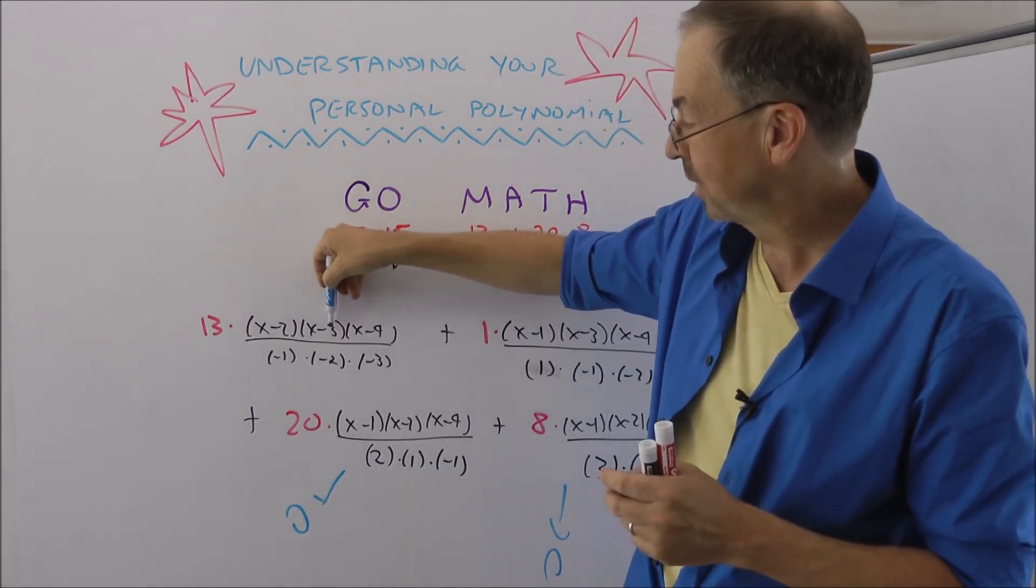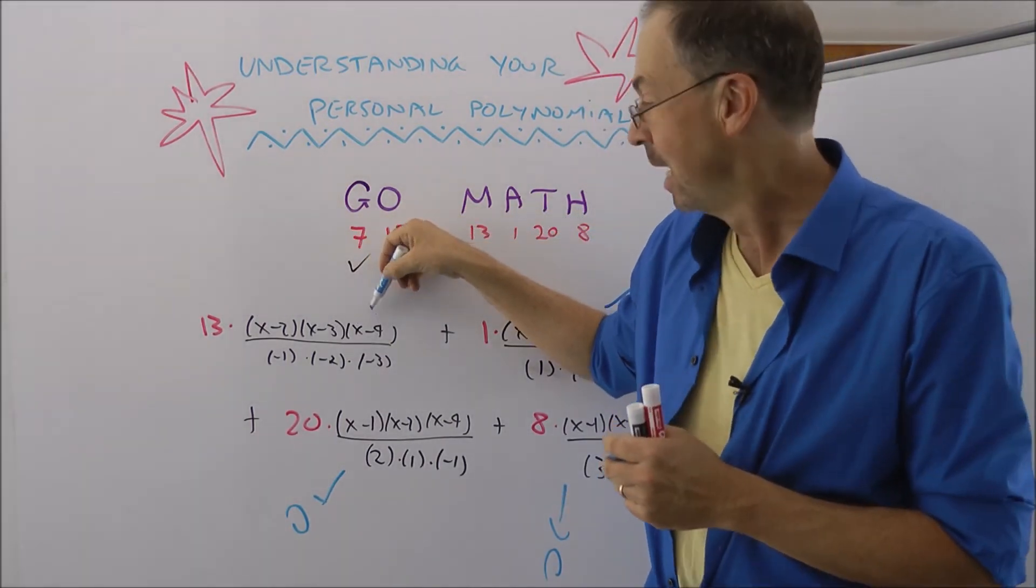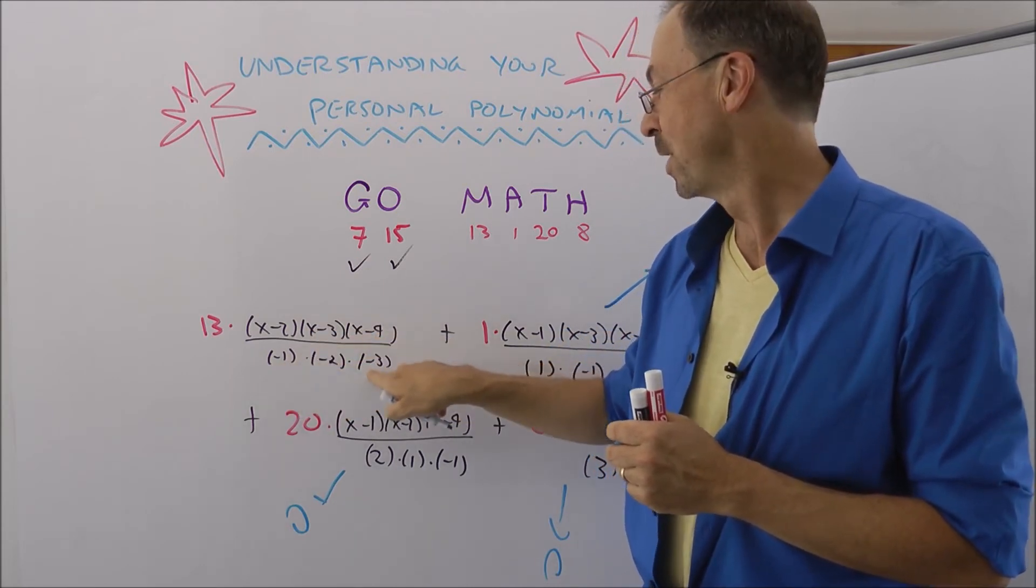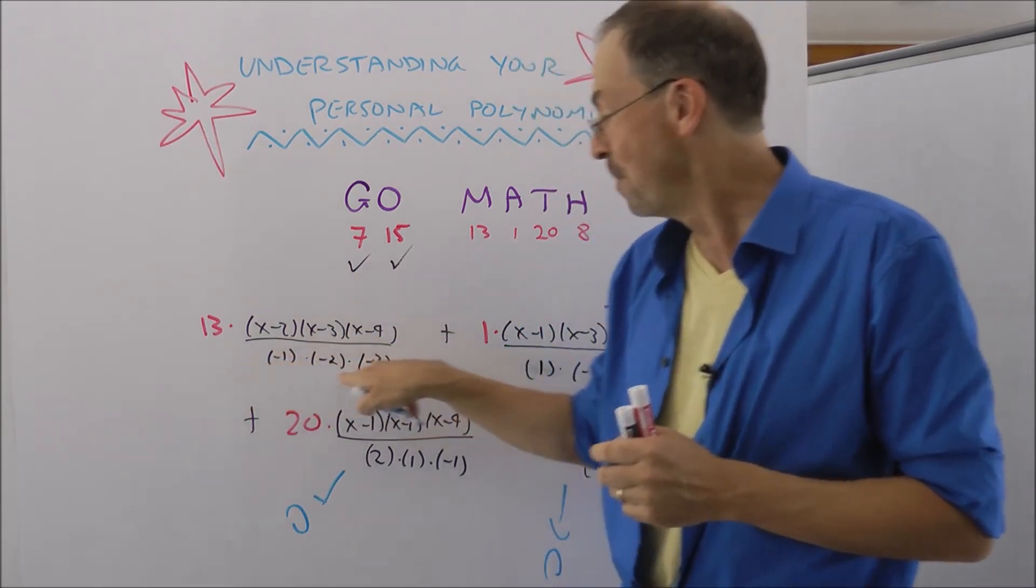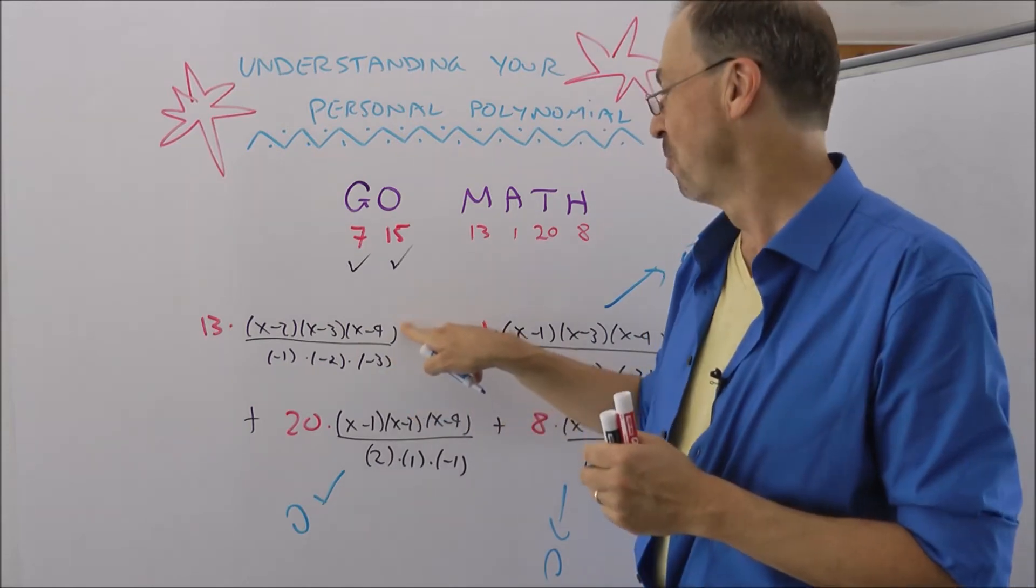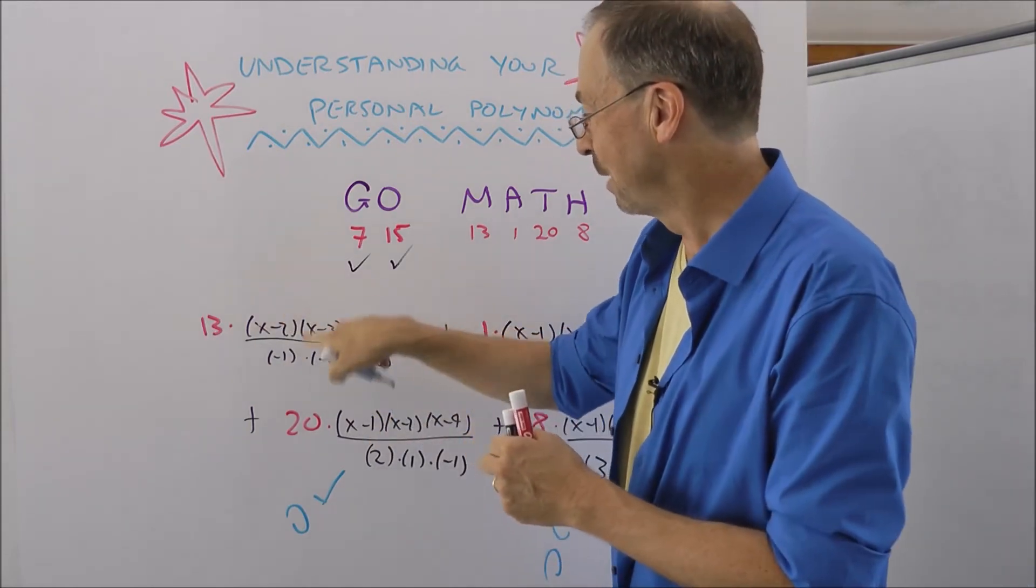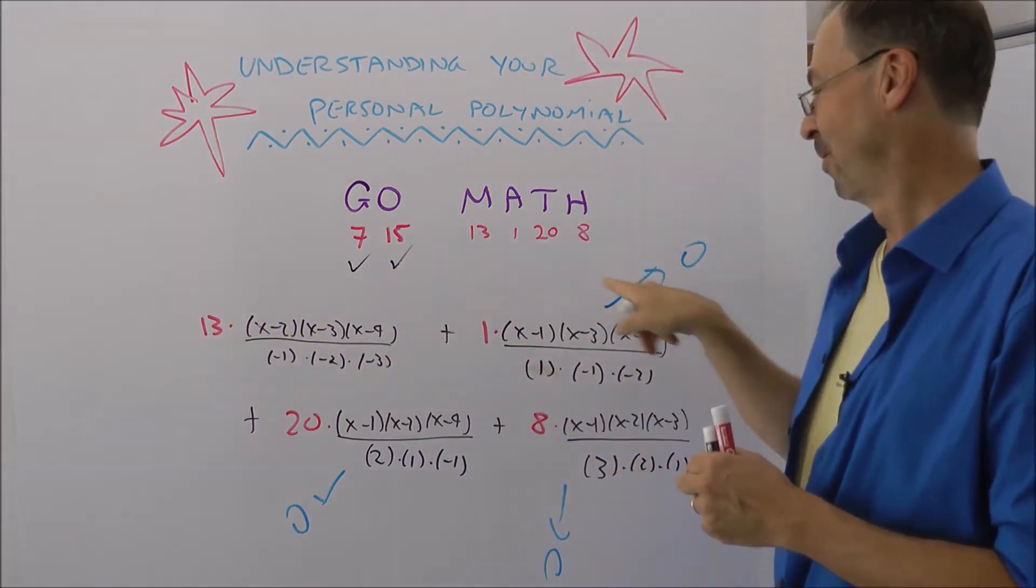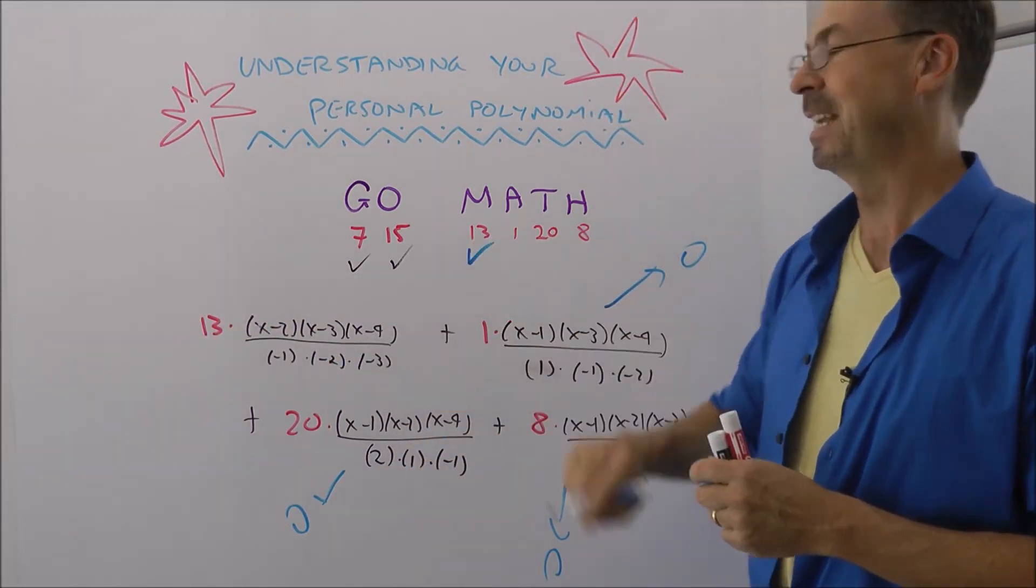And when x actually is 1, I've got 1 minus 2, 1 minus 3, 1 minus 4 on the numerator, but look, 1 minus 2 is negative 1, 1 minus 3 is negative 2, 1 minus 4 is negative 3. So I've designed the denominator to exactly match the numerator at x equals 1. So when x is 1, all this is just something divided by the same something is 1, 13 times 1, plus 0, plus 0, plus 0, does indeed give me 13.